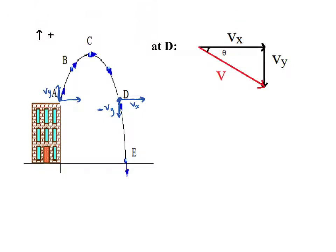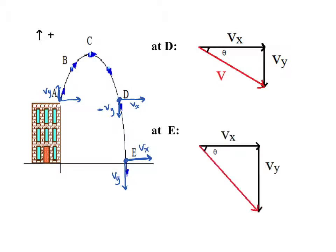In some situations, the object goes all the way down to point E, below the starting height. At E, is the x velocity the same? Of course — there's no push or pull in the x direction. But the y velocity has gotten much bigger, because as it falls, y velocity increases going downwards. To find the velocity at point E — the final velocity — I would need to use Pythagoras again to find the hypotenuse of the velocity triangle.